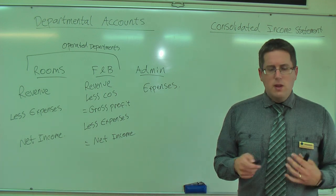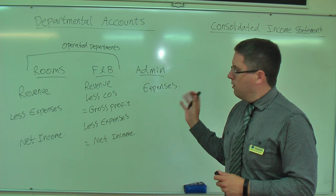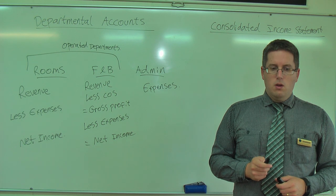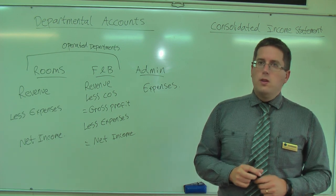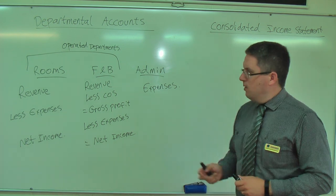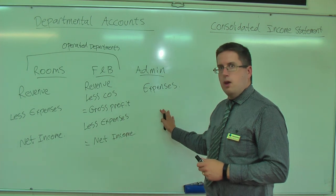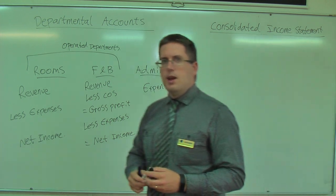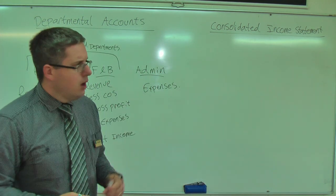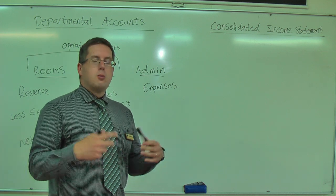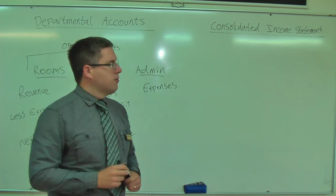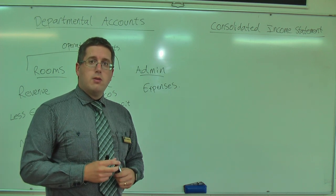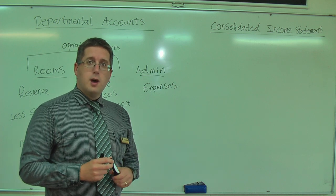Okay, so these are departmental accounts. We create and find the performance of each department. Right, what we do then is we take the performance of each of these departments and then put them together into what's called the consolidated income statement. Consolidated just means to put all together. That's all it means. So consolidated income statement means the whole hotel together. So here's the performance of each of the departments listed out.